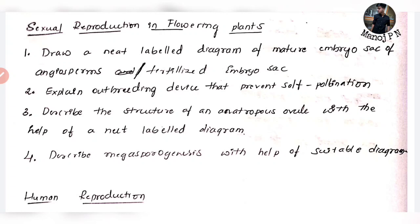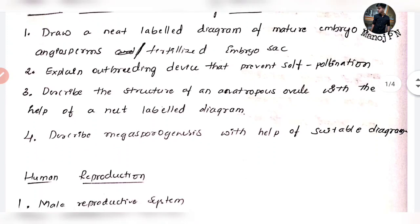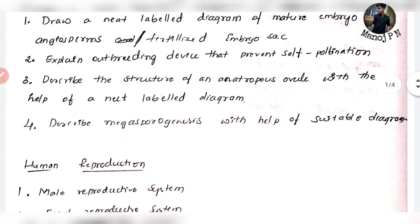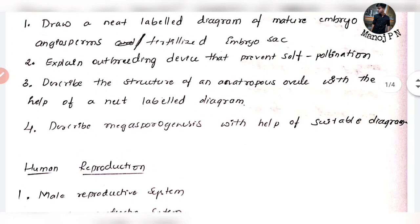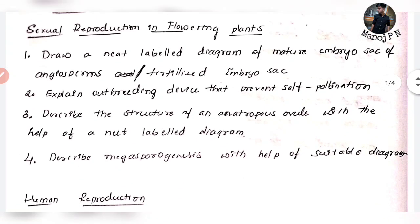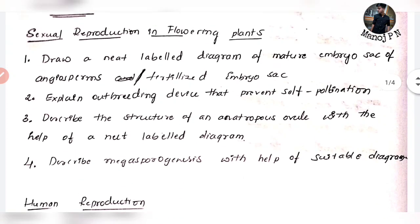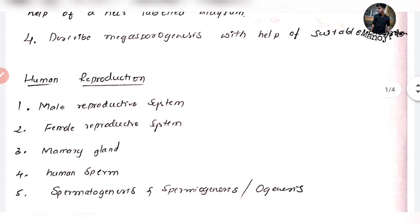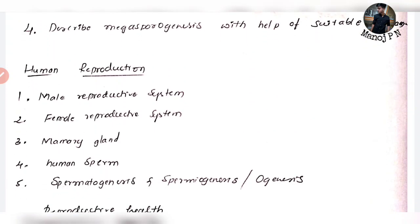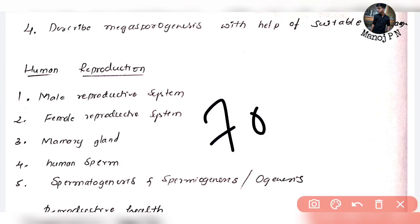Next, describe megasporogenesis — this is a very important topic and the answer is also important. You are ready to find it. Human reproduction — you will make it, and this is very good. You will find it to remove your paper.